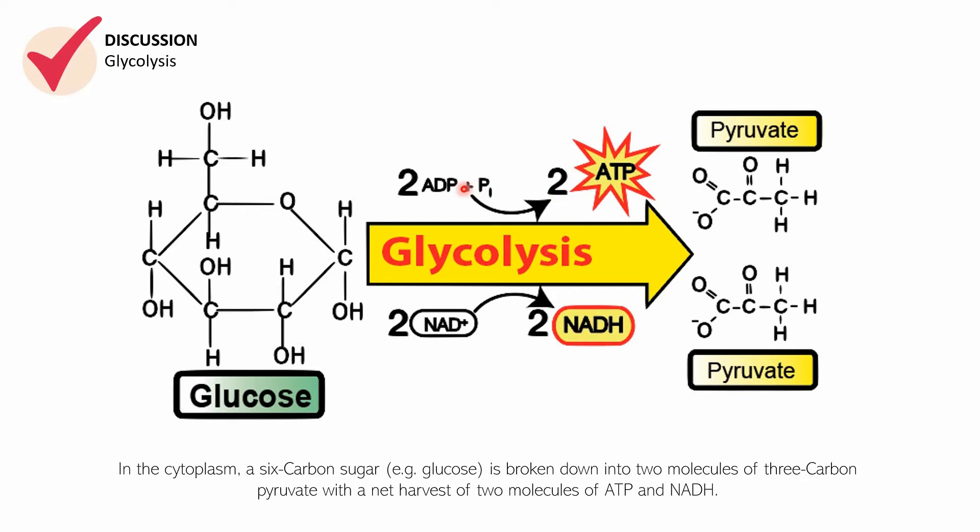So again, the phosphorylation of ADP will result to ATP and then with the reaction of NAD plus in the process of glycolysis, it will become NADH. And with that, what happens to the glucose, the big molecule glucose, it will be broken down to two molecules of pyruvate.